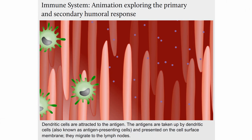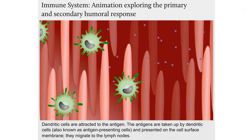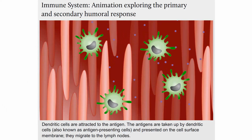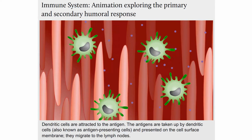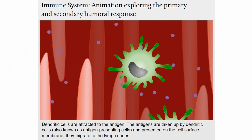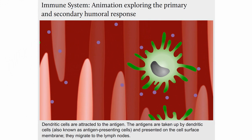Dendritic cells are attracted to the antigen. The antigens are taken up by the dendritic cells, also known as antigen-presenting cells, and presented on the cell surface membrane. They migrate to the lymph nodes.